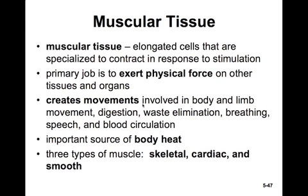Muscular tissue consists of elongated cells that are specialized to contract in response to stimulation, say from a neuron. The primary job is to exert physical force on other tissues or organs — for example, a biceps muscle might exert force on the bones of the arm in order to bend at the elbow joint, or the bladder may contract to expel urine. Basically, muscular tissue creates movement.